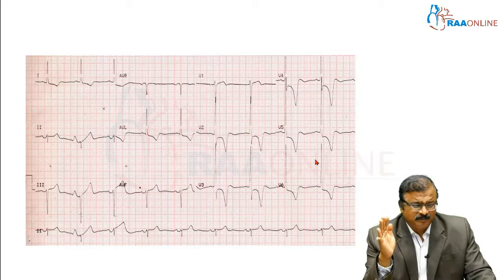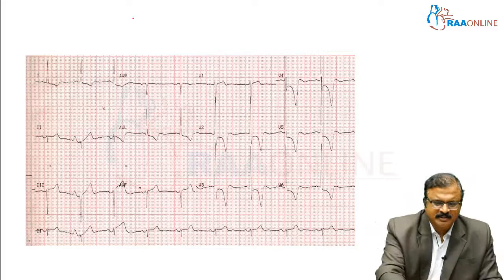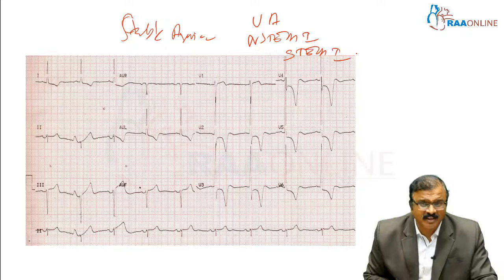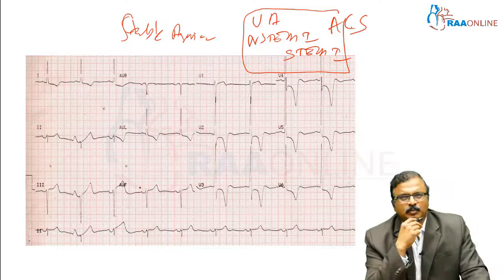For interpreting any CAD on ECG, you should know that CAD includes: stable angina, unstable angina, NSTEMI, or STEMI. Out of these, unstable angina, NSTEMI, and STEMI compose acute coronary syndrome. Stable angina does not come under acute coronary syndrome.